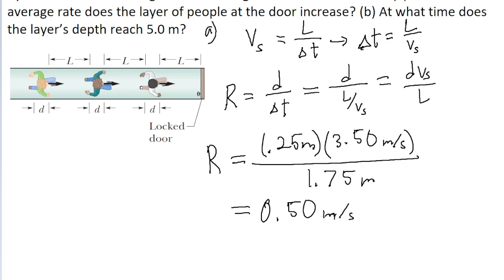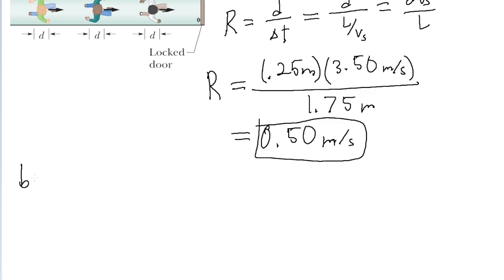So this means that the depth of people at the door is increasing at a speed of 0.5 meters per second. Part B of the problem asks us to find how much time it takes before the total depth of people at the door reaches a depth of, I'm going to call this capital D, of 5 meters.